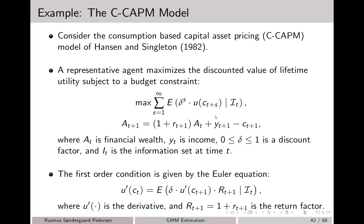In order to maximize this expected utility, we obtain a first order condition given by a so-called Euler equation, given in this formula here, where the prime denotes the derivative of the utility function. Note that capital Rt plus 1 is 1 plus rt plus 1, and this is the so-called return factor on financial wealth.